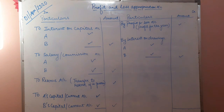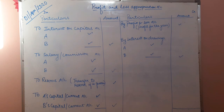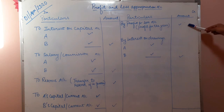This is the format of profit and loss appropriation account. As we all know, in every ledger account the left-hand side is the debit side and the right-hand side is the credit side. On the credit side of this account, the first entry is 'By Profit and Loss Account,' which refers to the profit for the current year. The profit for the current year as per the question will be written on the right-hand side.